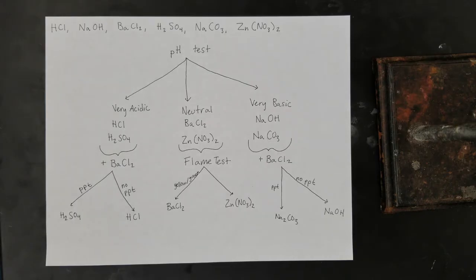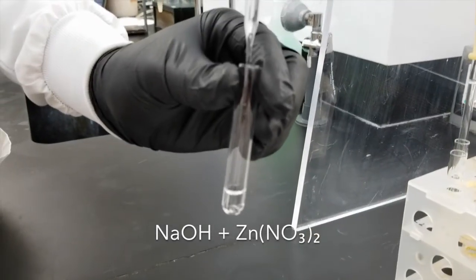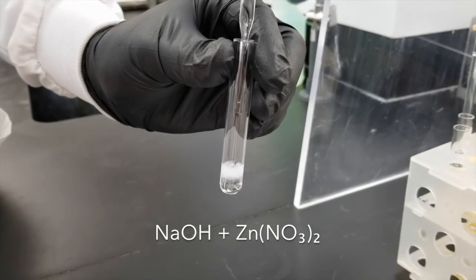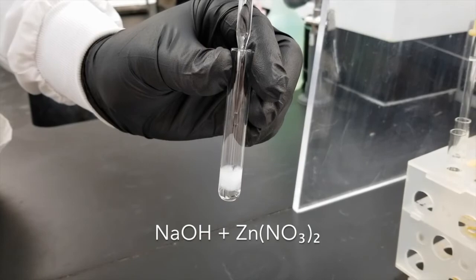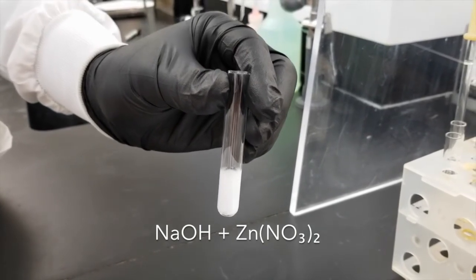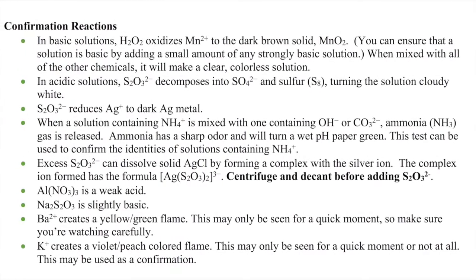At this point, we have a good idea of the identity of all of our unknown solutions, but we have to perform additional tests to confirm the results. An example of a possible confirmation test for barium and zinc besides the flame test would be to add sodium hydroxide to both barium chloride and zinc nitrate. Only the reaction with zinc nitrate should give a precipitate. There's also a list of confirmation reactions in your lab manual.